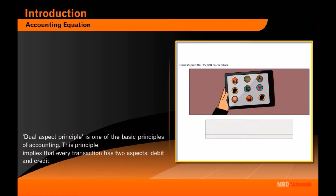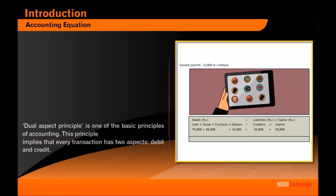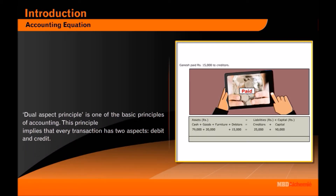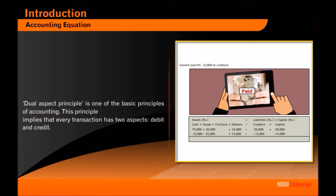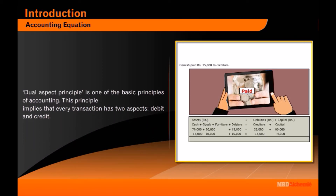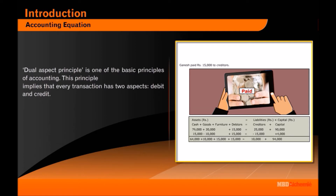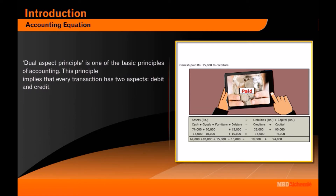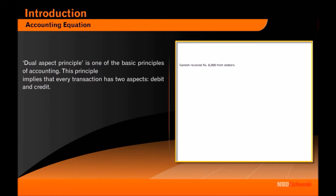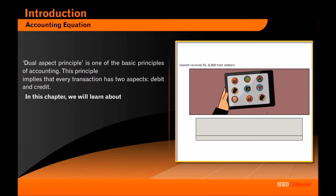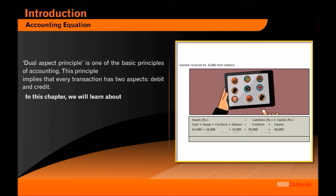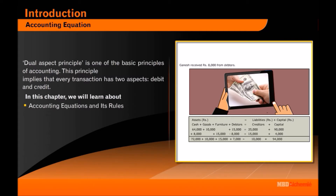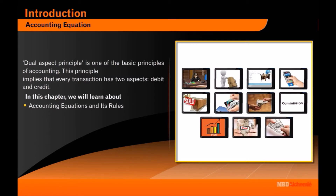The dual aspect principle is one of the basic principles of accounting. This principle implies that every transaction has two aspects: debit and credit. In this chapter, we will learn about accounting equations and its rules.